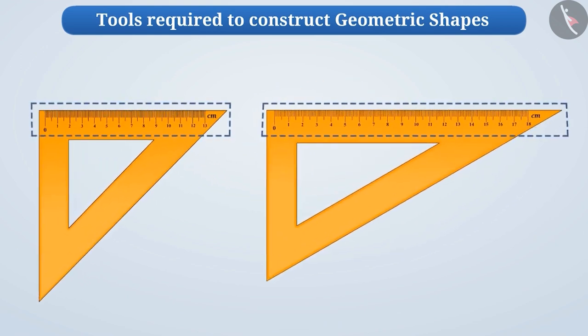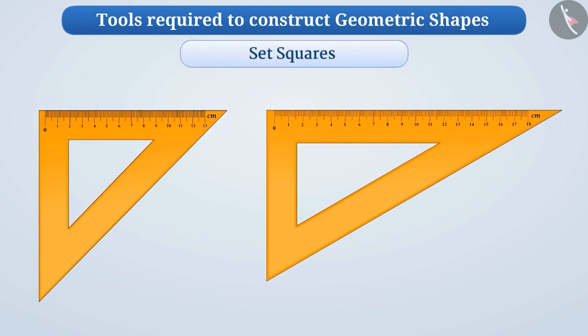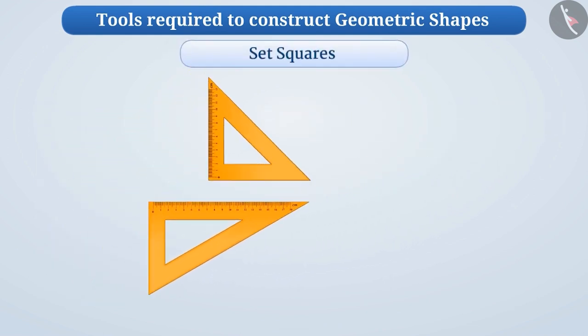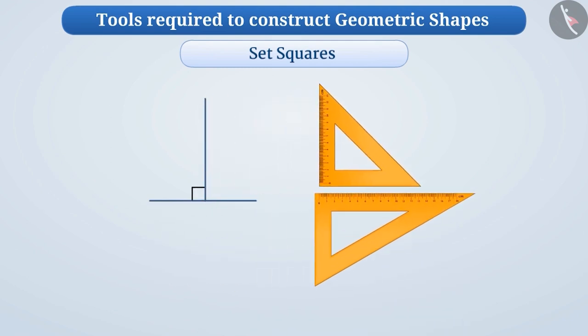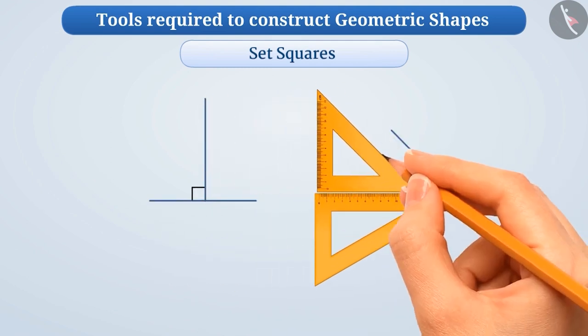There are signs in centimeters on the sides forming their right angles. We call them set squares. They are used to draw perpendicular and parallel lines.